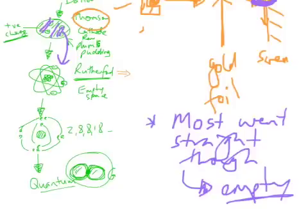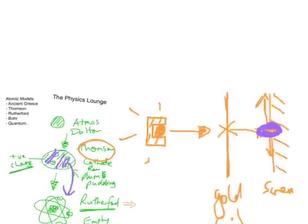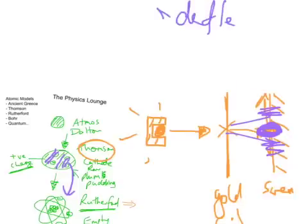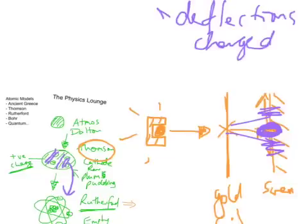The second observation was that there were deflections. So a proportion were deflected either side. So they didn't go straight through, they were deflected either side. So the deflections, they indicated that there was a charged nucleus.